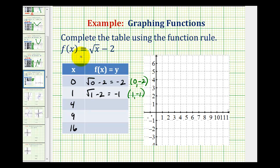Next, we have x equals four. So to determine the function value or y value, we'll substitute four for x. Square root of four minus two. Well, the square root of four is two. Two minus two is equal to zero. So the graph contains the point with coordinates four, zero.